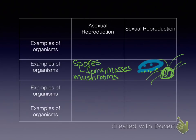You should have every box full in the asexual column, and in the sexual reproduction column, the examples you have are fertilization, plant pollination, and meiosis — with four boxes at the bottom still empty. Make sure you have all your notes because you're going to have a quiz tomorrow. Go back and review anything you need to.